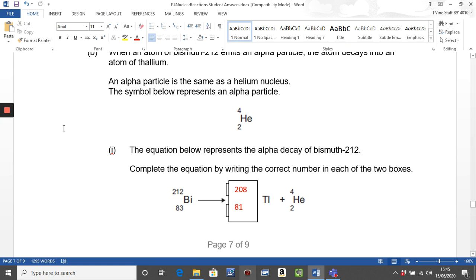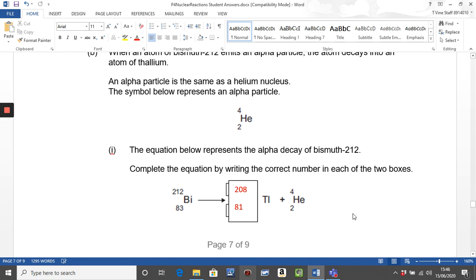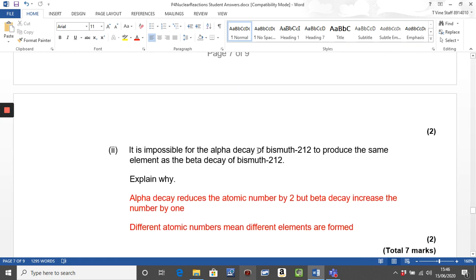So writing alpha decay equations, when an atom of bismuth emits an alpha particle, the atom decays into an atom of thallium. An alpha particle is the same of a helium nucleus and so can be represented by this symbol here. And you simply have to complete the missing numbers. 212 take away 4 is 208. 83 take away 2 is 81. Very straightforward there. Nice two marks. It's impossible for alpha decay of bismuth to produce the same element as beta decay. Again, you need to emphasize that atomic number change. Alpha decay changes the number by 2, but beta decay increases number by 1. Different atomic numbers mean different elements. Nice, straightforward explanation there.